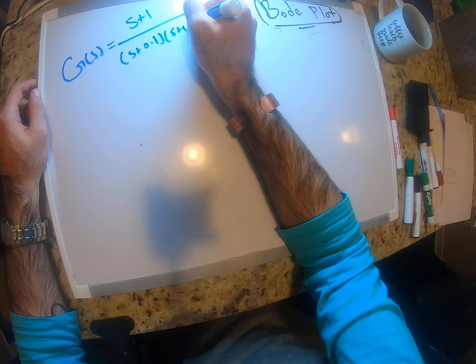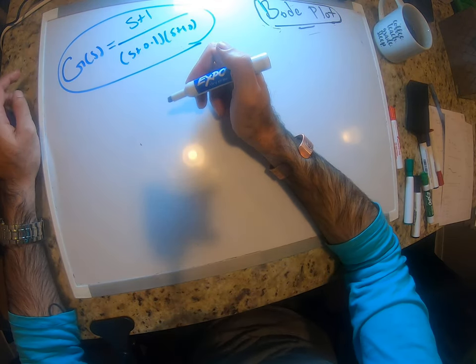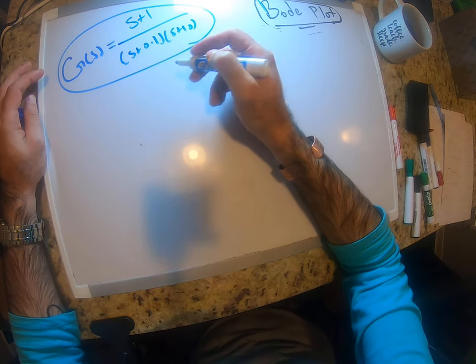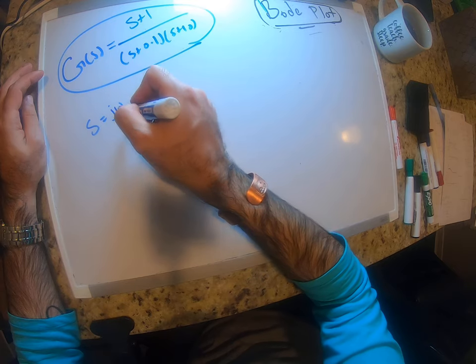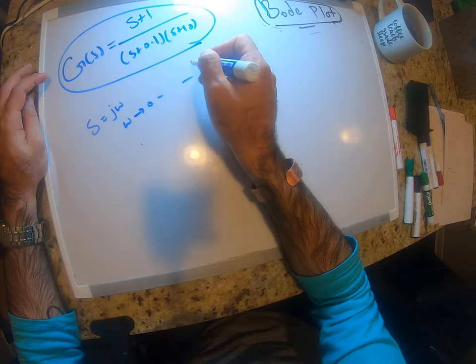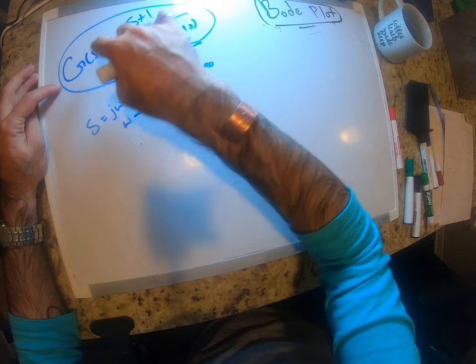So as I said, if you want to draw the perfect plot, you have to sweep the frequency. s is equal to jω, right? So you have to sweep the frequency from 0 to infinity and for each of them find the magnitude and the phase of it.